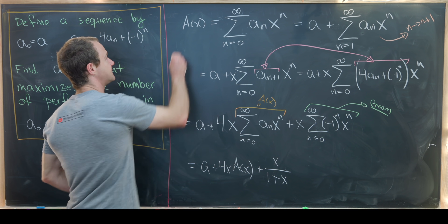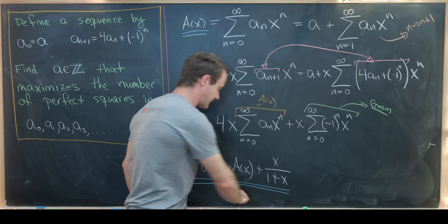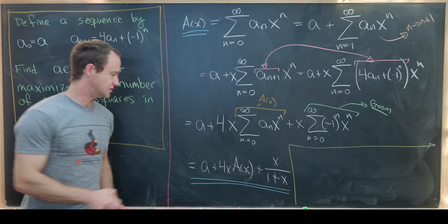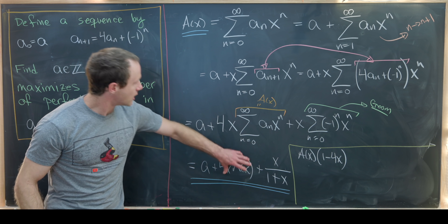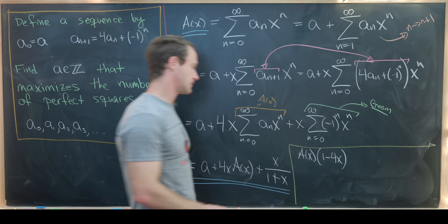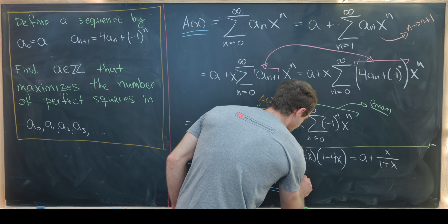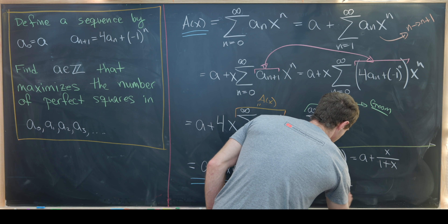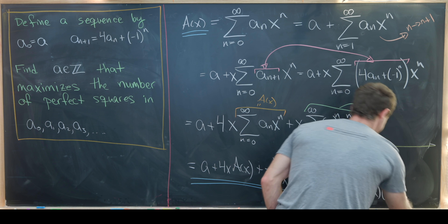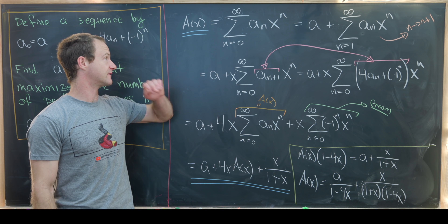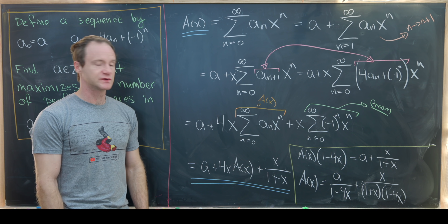Looking at the left and right hand sides, we can easily solve for A(x). Moving the 4x·A(x) term over gives A(x)(1 - 4x) = a + x/(1+x), so dividing through yields A(x) = a/(1 - 4x) + x/((1+x)(1 - 4x)). This is a nice rational function expression for the generating function of the sequence a_n, and on the next board we'll re-expand it to get a closed form.